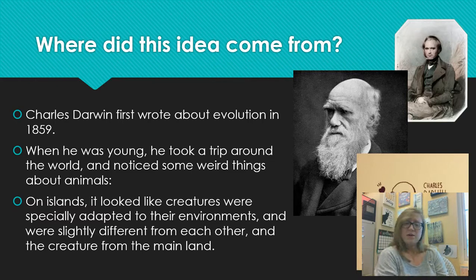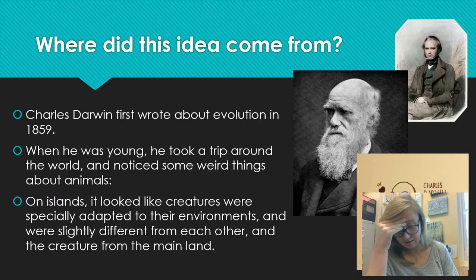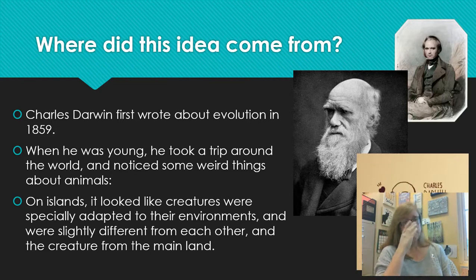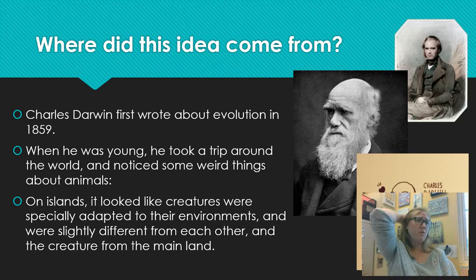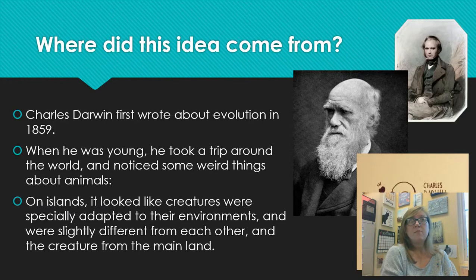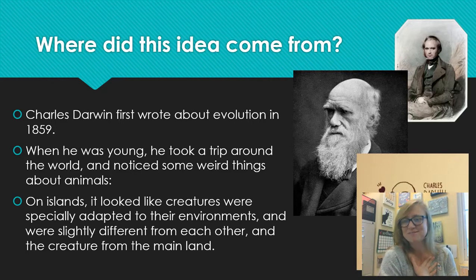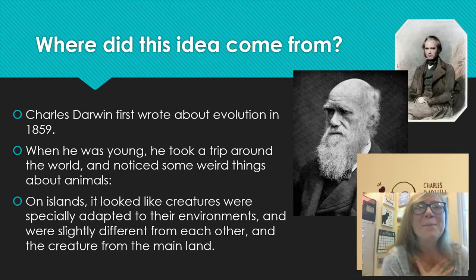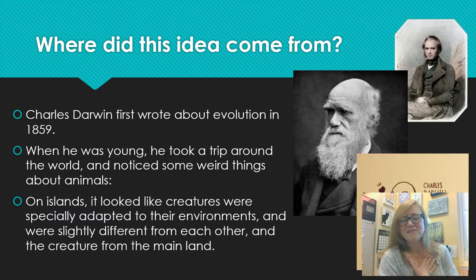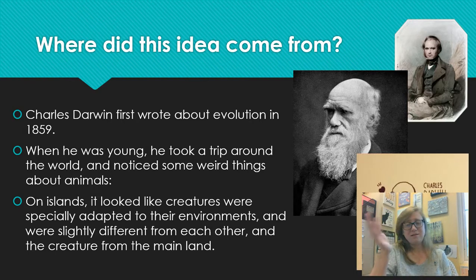Wallace wrote to Darwin saying he liked his idea, and Darwin realized, 'Oh crap, this guy's got a really good idea and I haven't published my book yet.' So Darwin went ahead and published his book, even though he was really nervous and worried people wouldn't like what he had to say — and they didn't; people still don't. Darwin gets all the credit, poor Alfred Wallace. Darwin and Wallace are credited with coming up with the idea of natural selection: nature is what decides what's going to survive.